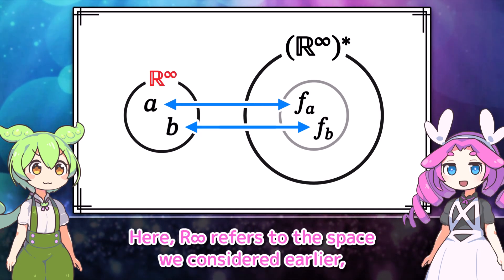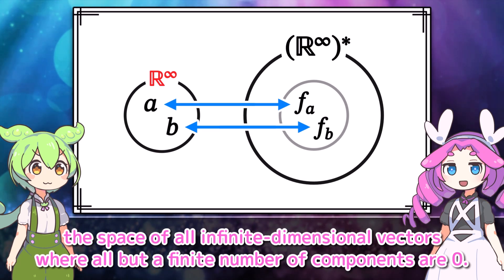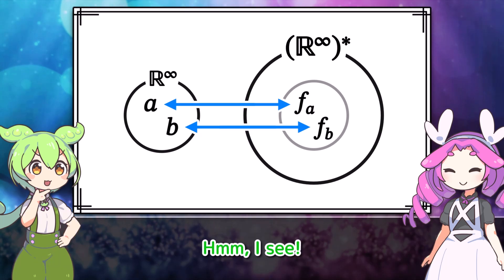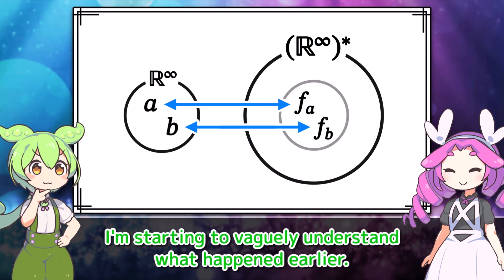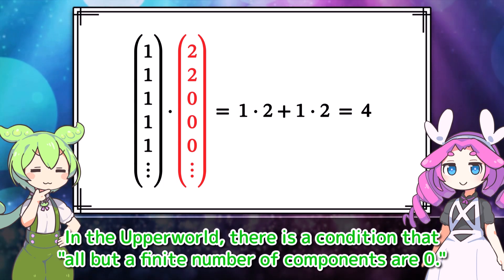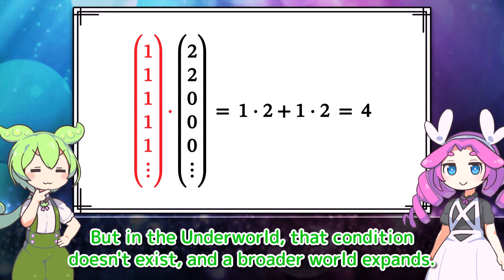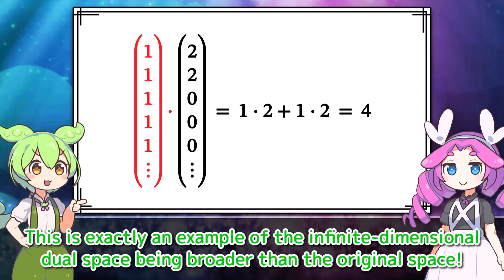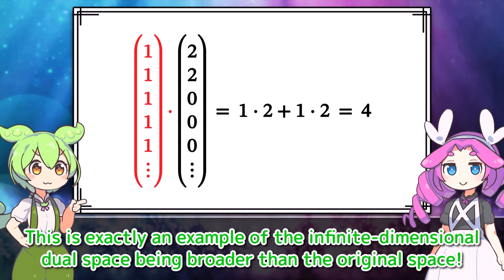Now, numerical vectors can be said to correspond to functions that exist in the dual space. In fact, this correspondence is one-to-one in the finite-dimensional case. But in the infinite-dimensional case, it is not one-to-one, and the dual space is known to be broader than the original space. Here, R-infinity refers to the space of all infinite-dimensional vectors where all but a finite number of components are zero.